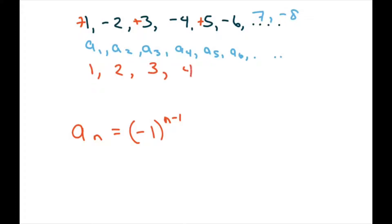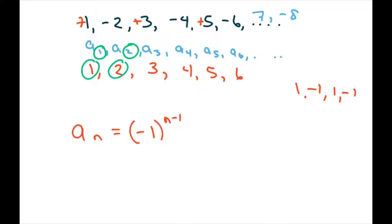We're just going to write 1, 2, 3, 4, 5, 6. We already took care of the negative 1, 1, negative 1, 1, and so forth. So now they match exactly — our 1's match, our 2's match, our 3's and so forth match. So you're just going to write n, because they match. If it was one less or something, you would write that. So this is your final answer right here.